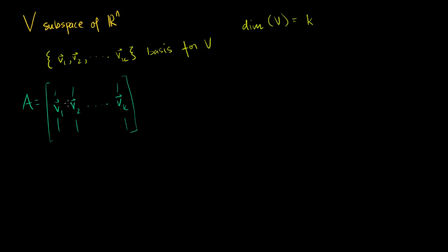Just to keep track of dimensions: we have k of these vectors, so we have k columns. And since each vector is a member of Rn, each has n entries, so we have n rows. It's an n by k matrix.